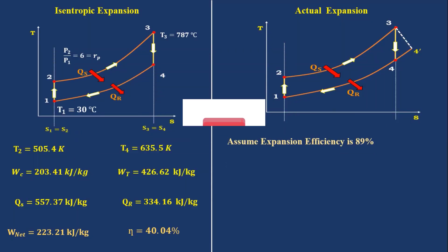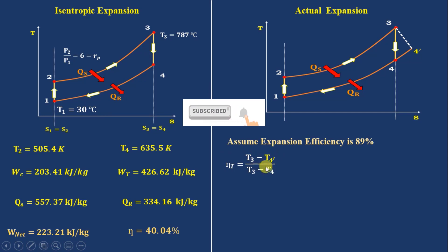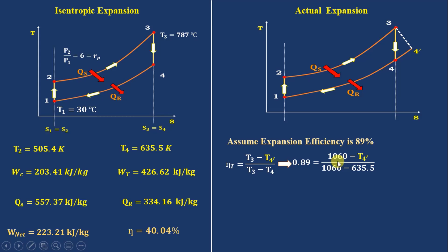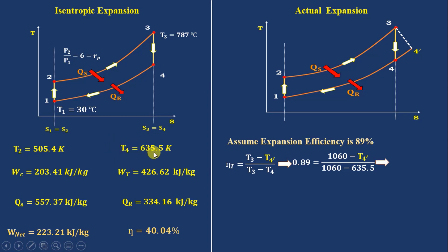Now let's start the turbine problem. The turbine efficiency is 89%. The isentropic efficiency of the turbine equals actual expansion divided by isentropic expansion: 0.89 = (1060 − T4') / (1060 − 635.5). T4' is found using the isentropic relation T3/T4 = (P3/P4)^((γ−1)/γ). Solving, T4' becomes 682.2 K.